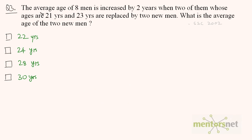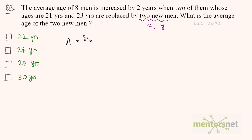The third question: The average age of 8 men is increased by 2 years when 2 of them whose ages are 21 years and 23 years are replaced by 2 new men. What is the average age of these 2 new men? Let us assume the ages of the 2 new men are X and Y. Let A be the average age of the original 8 men, equal to the sum of the 6 remaining men plus 21 plus 23, divided by 8.